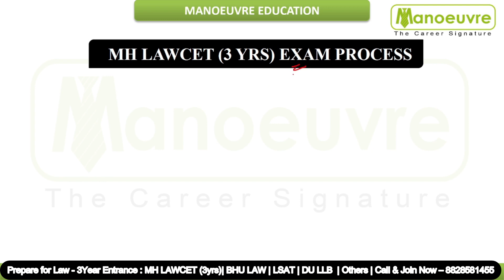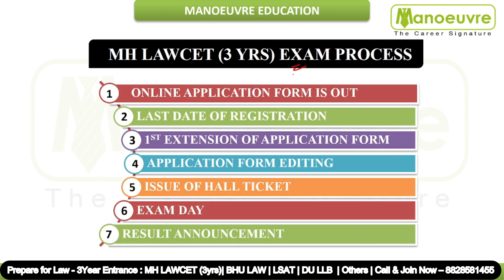Now let us see the MH Law CET 3 years exam process. First, the online application form is out. After this, the last date of registration comes — 21-4-2022. Then there is a first extension of the application form, also 21-4-2022. After that, the CET cell will give a form editing option — if your photograph, signature, or exam center choice has a mistake, they will open a window for form editing.